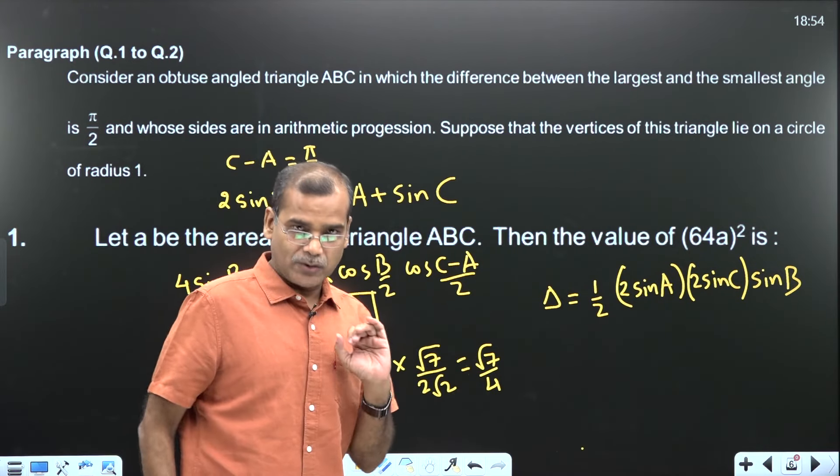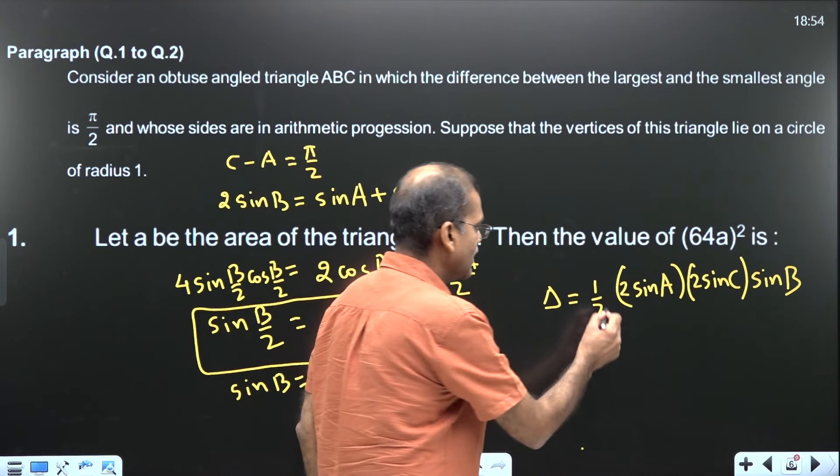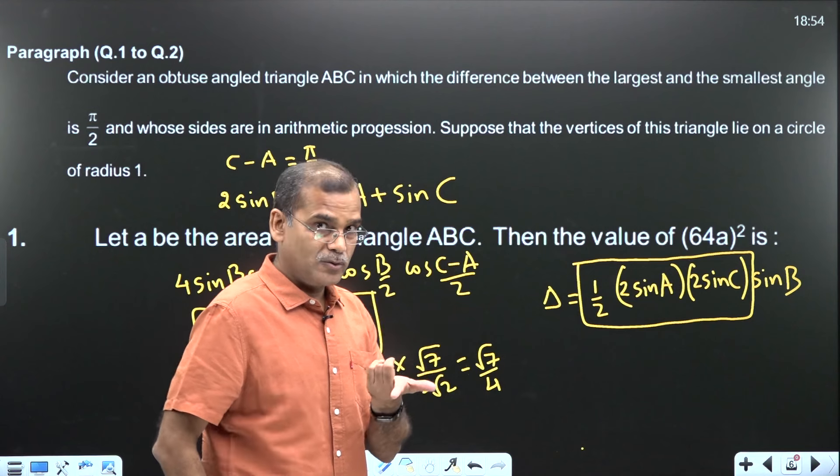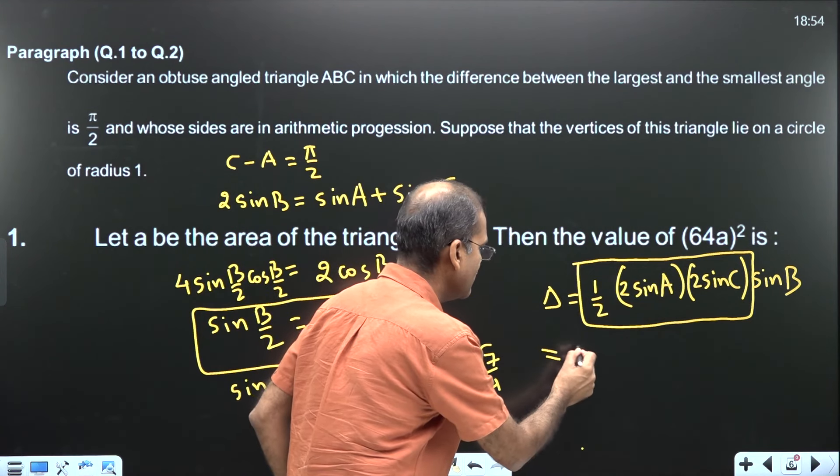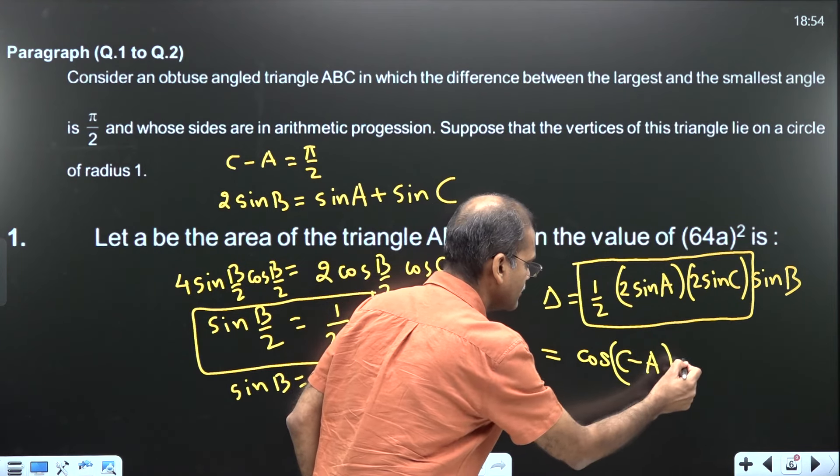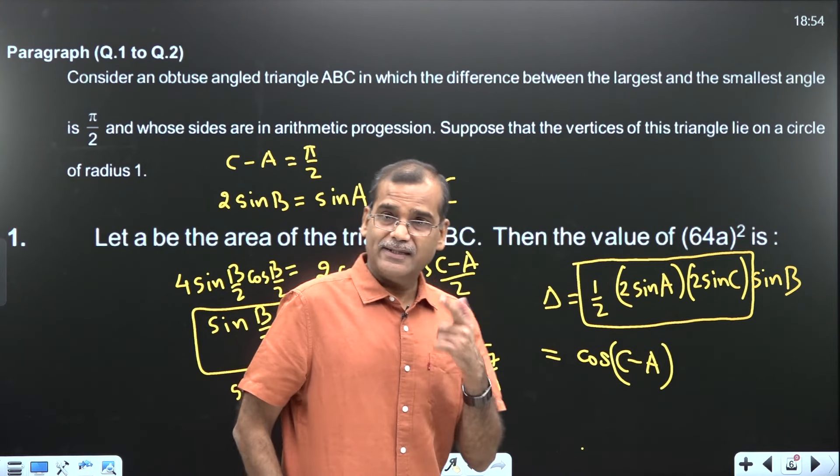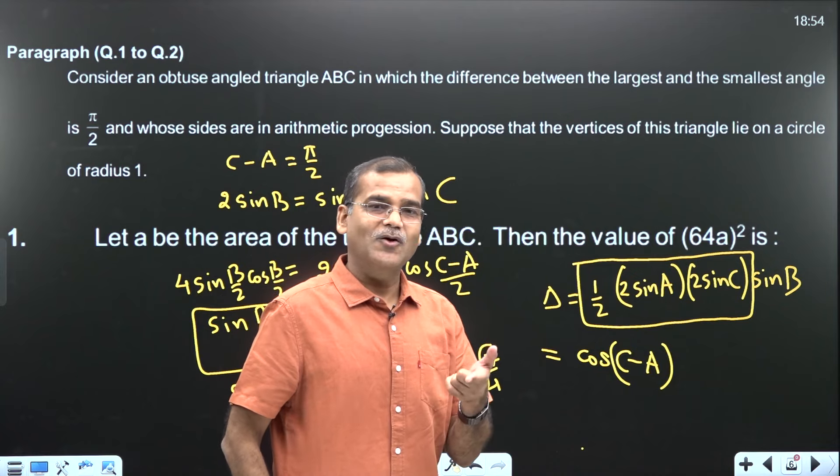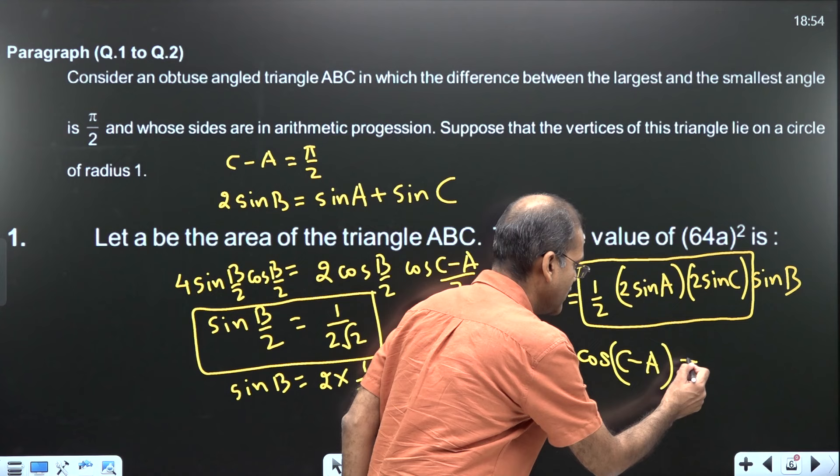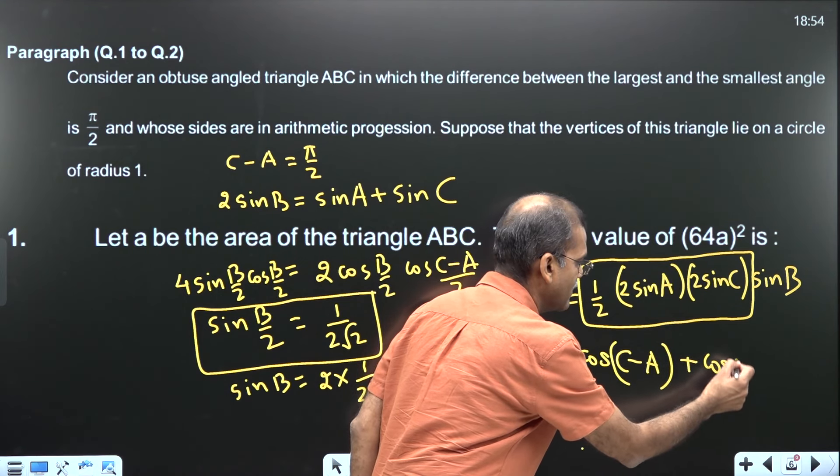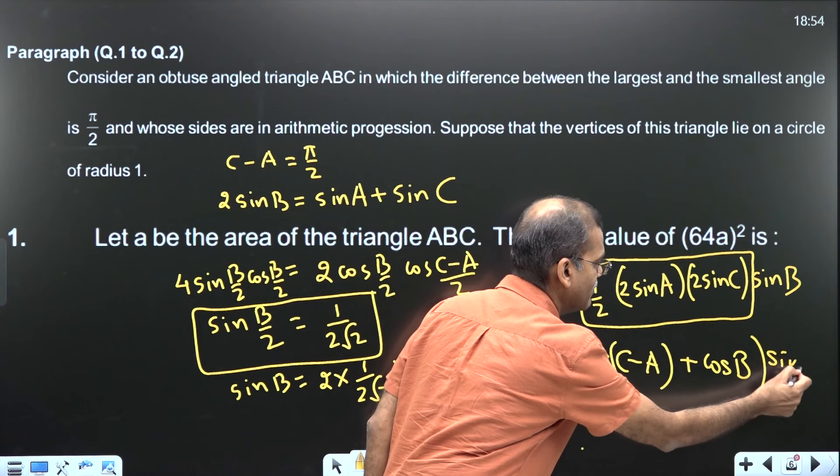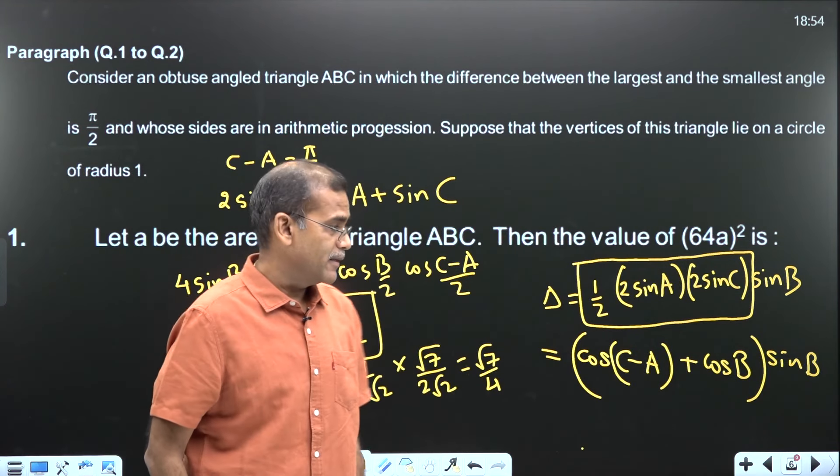I think sin B is known. So the idea is that 2 sin A sin C, with the help of product to sum formula, becomes cos of C minus A minus cos of C plus A. I think you agree that cos of C plus A is minus cos B, so it becomes plus cos B into sin B. I think this is what my area is.